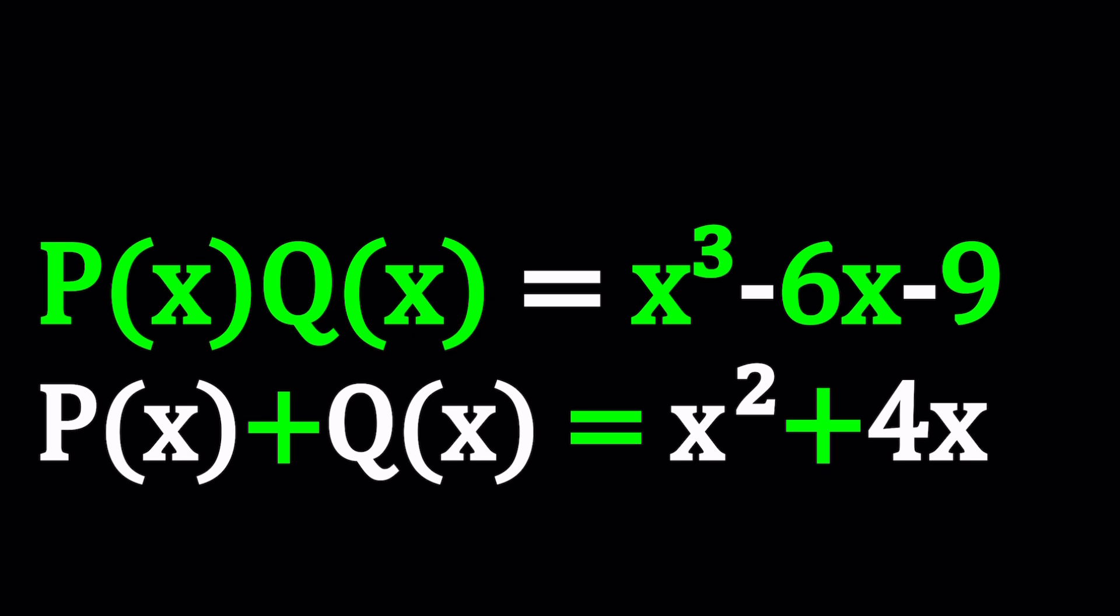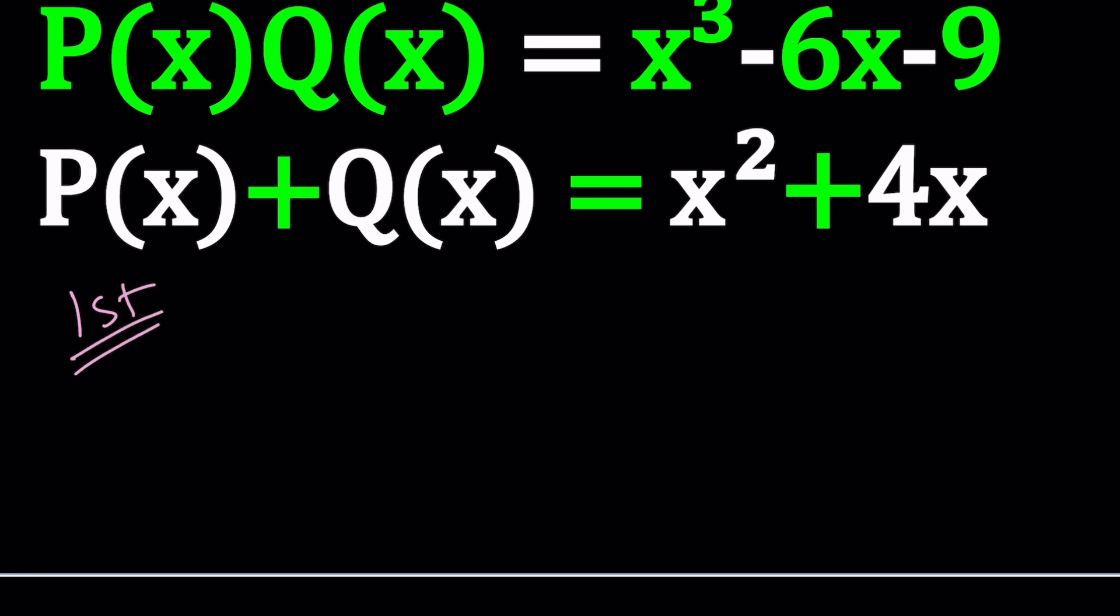So can we find polynomials that satisfy these two equations? Let's find out. I'll be presenting three methods, and let's start with the first one. For my first method, I want to use substitution. From the second equation, let's isolate Q(x), which can be written as x² + 4x - P(x).